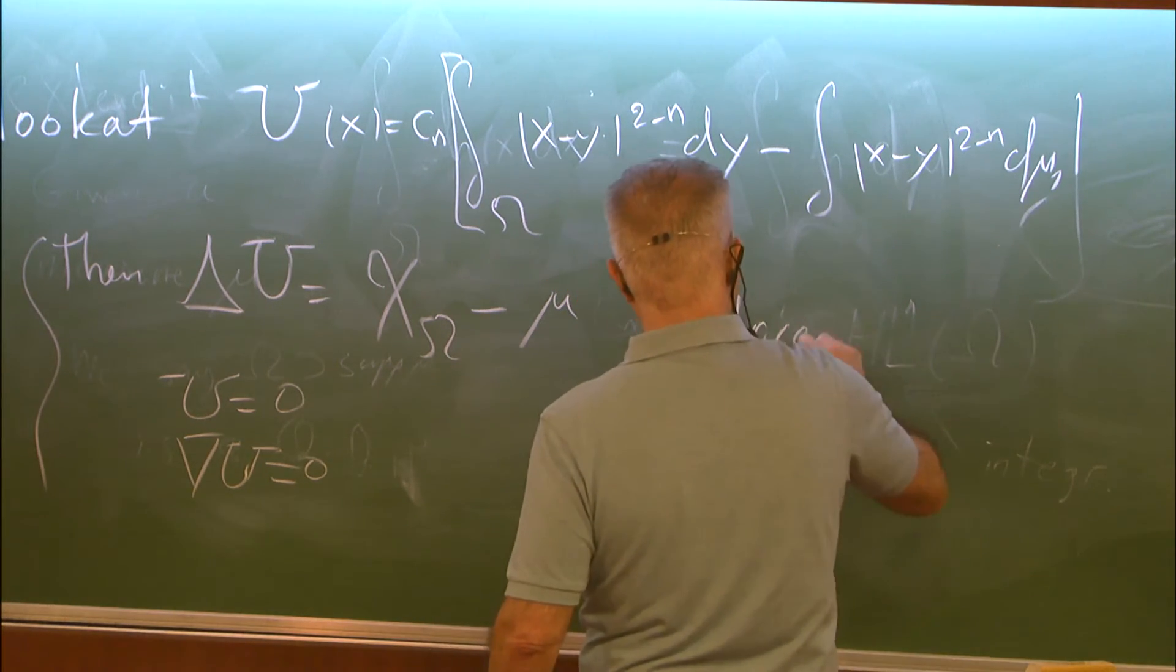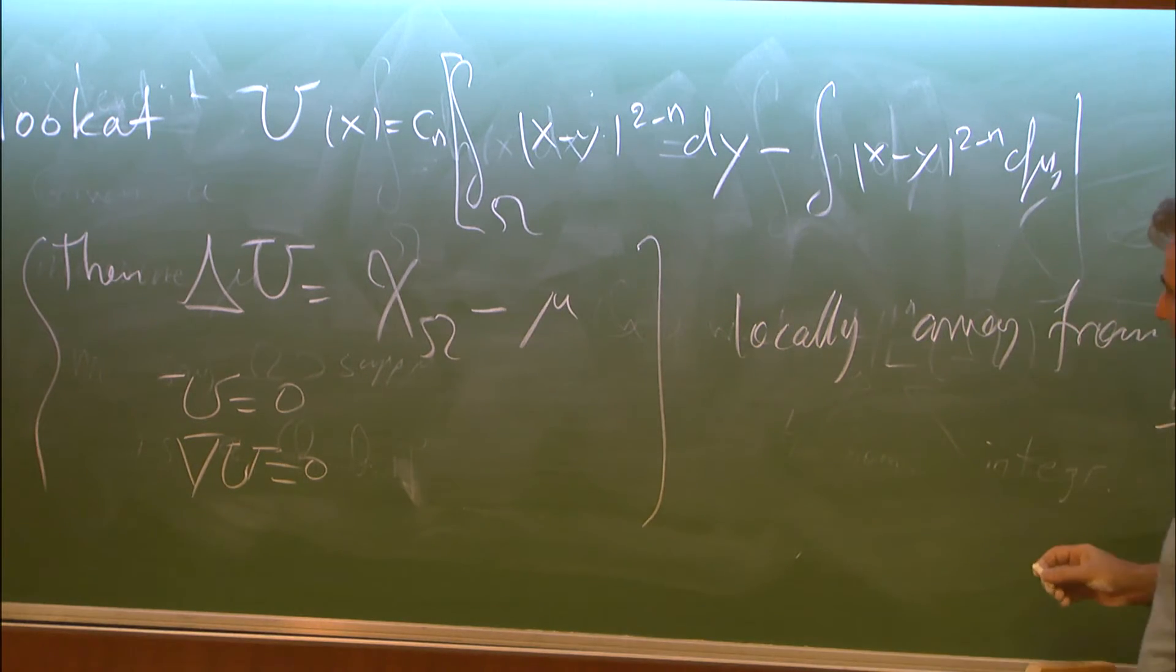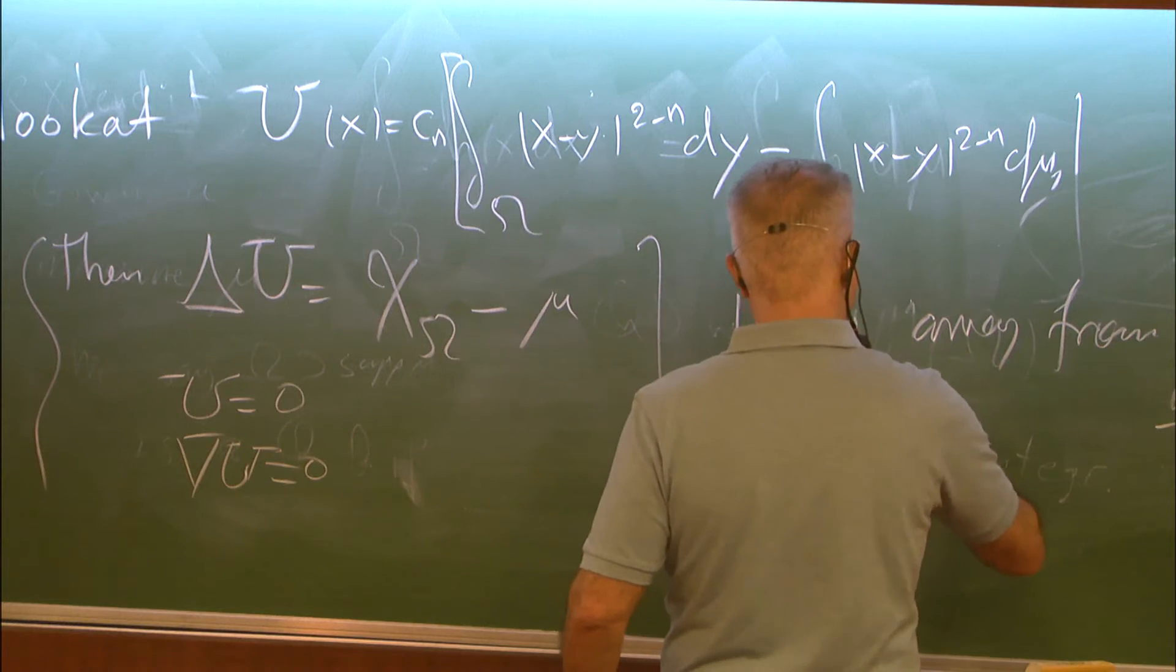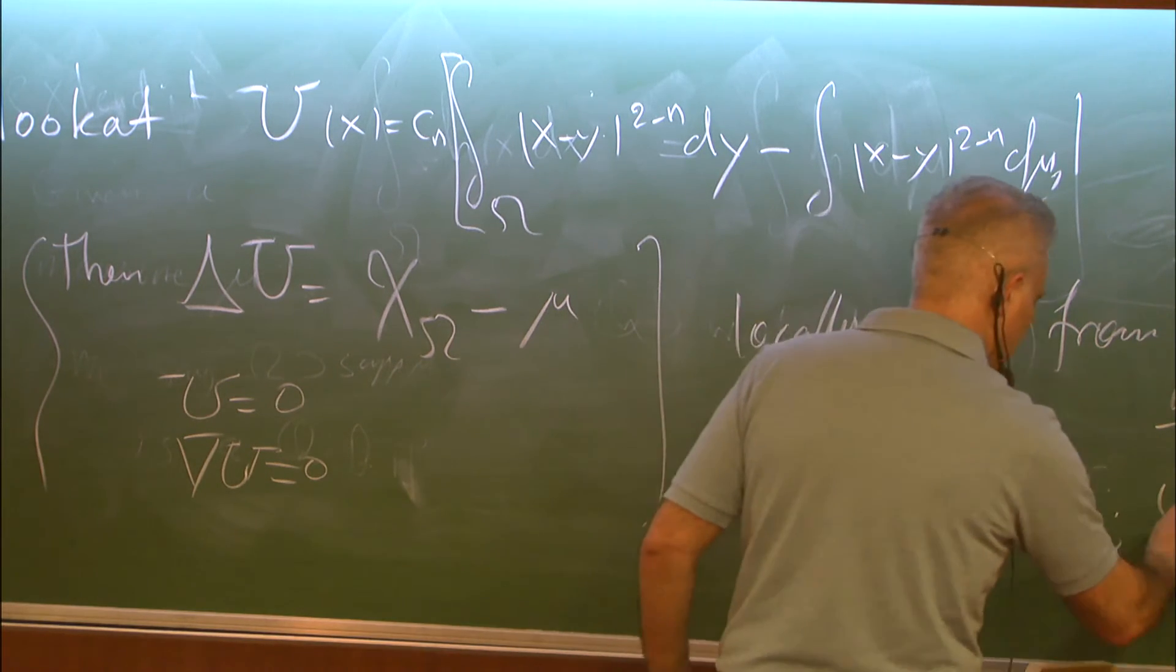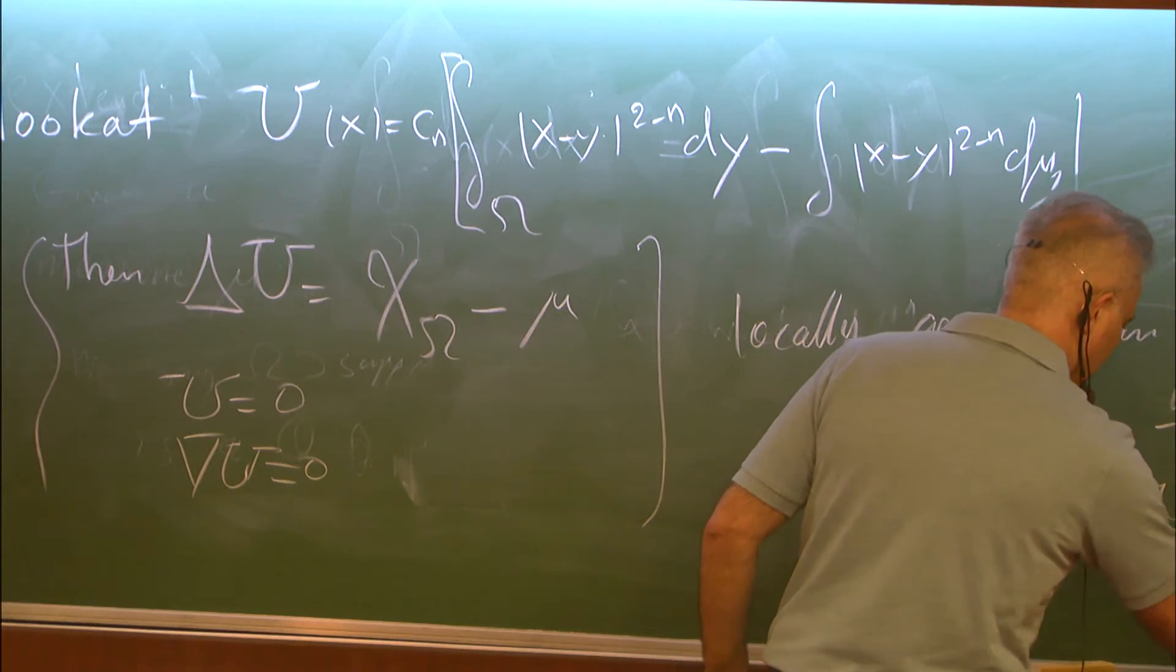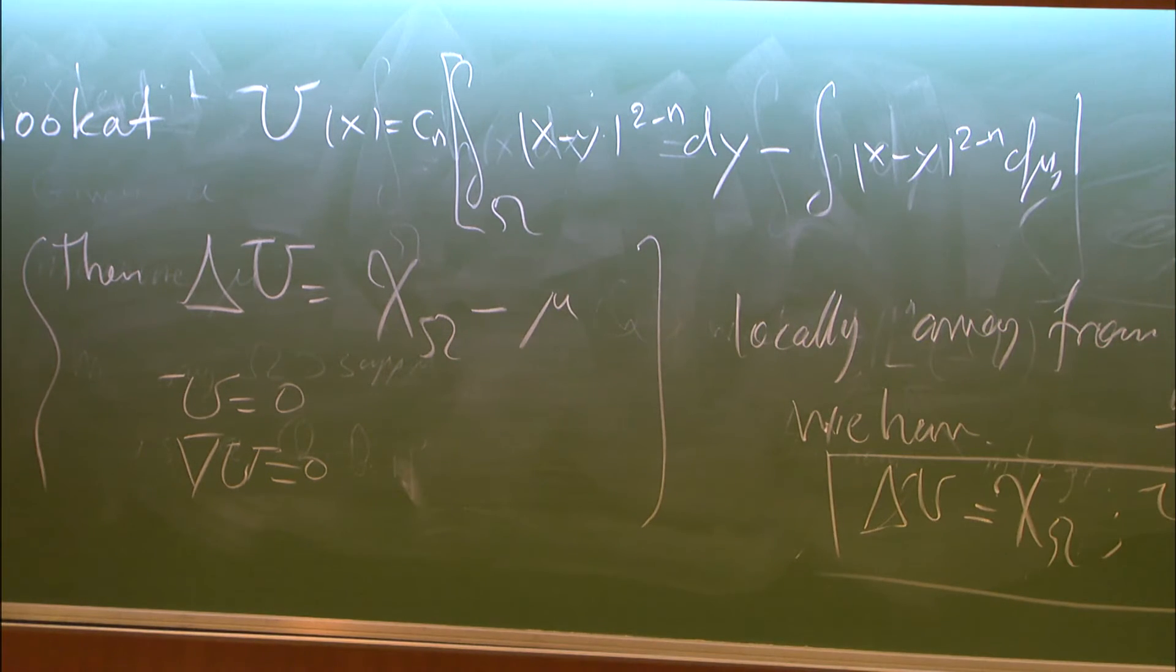So locally, away from the measure, we don't see, we have Δu = χ_Ω. So you can actually write this problem differently.